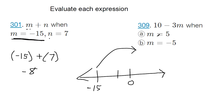And then on 309, we've got to do it twice, once when m equals 5 and again when m equals negative 5. Let's do part a first. I'm going to plug in 5 for m. I've got to do multiplication first. 3 times 5 makes 15. Now 10 subtracted by 15 makes negative 5.